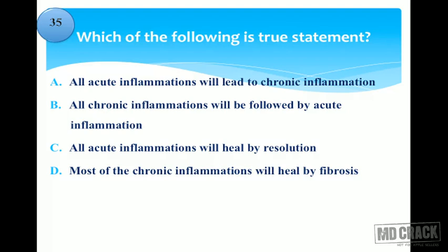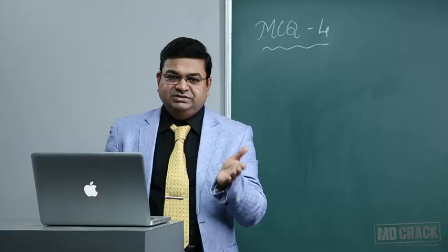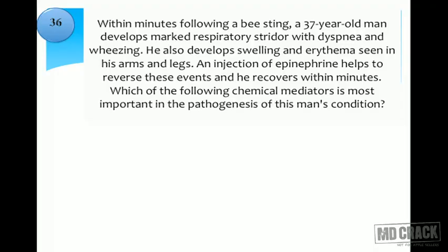The second option — all chronic inflammation is preceded by acute inflammation — is also false. Autoimmune reactions and tuberculosis, for example, start as chronic inflammation without a prior acute phase. Certain bacterial and fungal infections develop over weeks or months as chronic inflammation from the start. The third option — all acute inflammations heal by resolution — is false, as acute inflammation can also lead to fibrosis or chronic inflammation. The correct answer is the fourth: most chronic inflammations will heal by fibrosis.